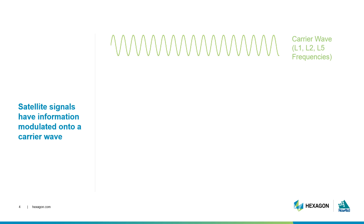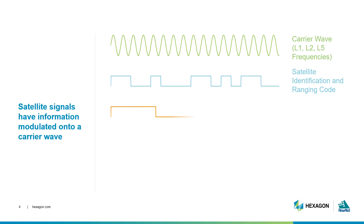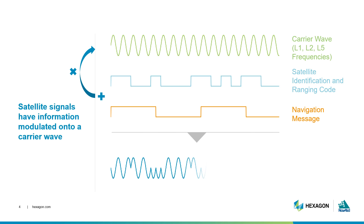A carrier wave is a standard sine wave seen at the top of this slide. A GPS signal is made up of a unique identification code known as PRN code, which is used to range from a satellite to the receiver, and a navigation message that contains satellite health, status, time, and orbital information. The satellite combines its identification code and navigation information and then modulates that onto the carrier wave. What results is a modulated signal that is sent down to a receiver. Knowing exactly how the data is superimposed onto the carrier signal, the receiver can extract the required information for satellite ranging from the modulated signal.